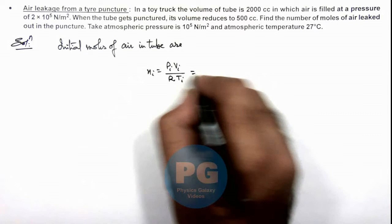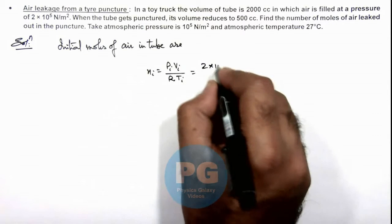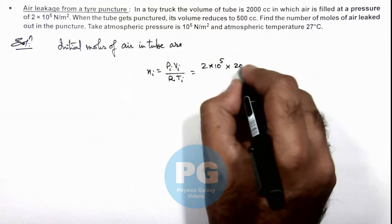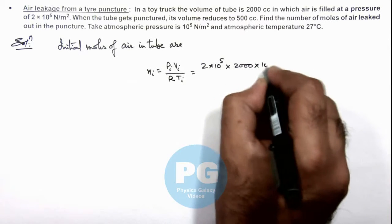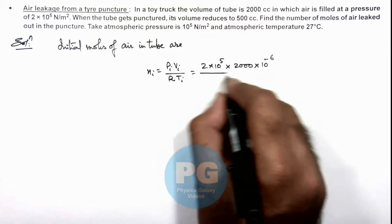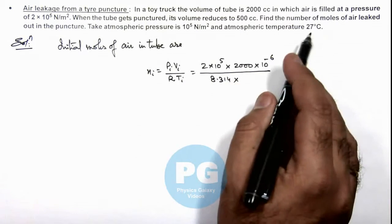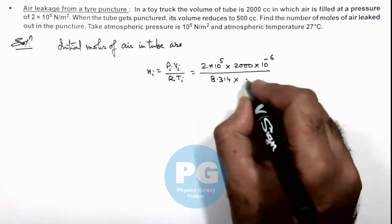So we substitute the value: pressure is 2×10^5, volume is 2000 cubic centimeter, this is 2000×10^-6, divided by value of R is 8.314 and temperature is 27 degree Celsius which is 300 Kelvin.